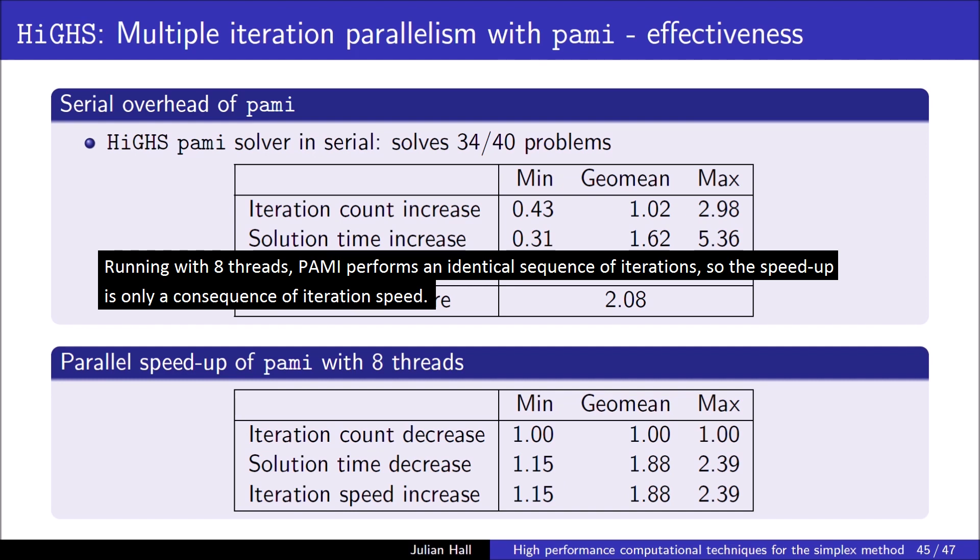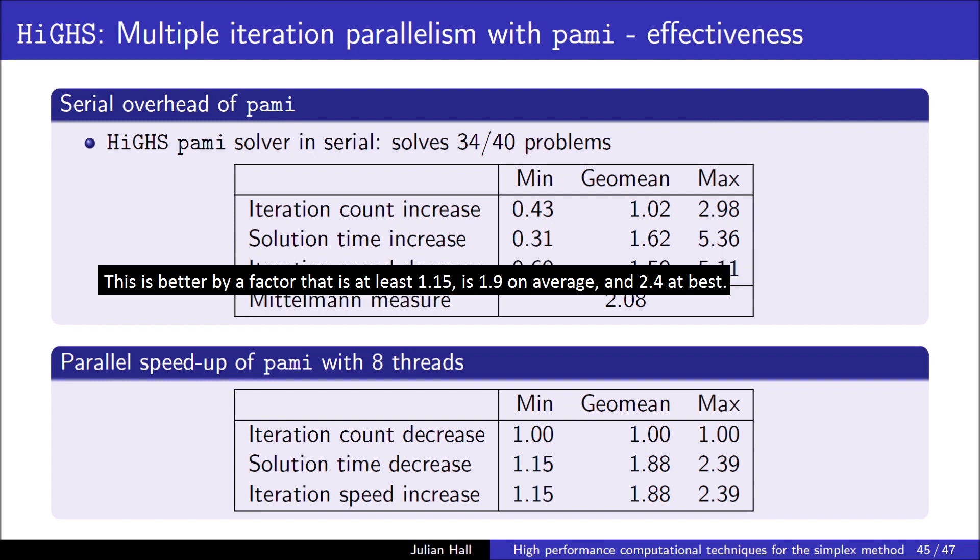Running with eight threads, PAMI performs an identical sequence of iterations, so the speed-up is only a consequence of iteration speed. This is better by a factor that is at least 1.15, is 1.9 on average, and 2.4 at best.